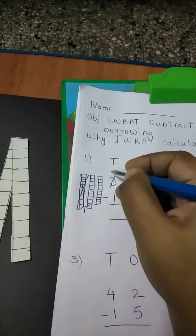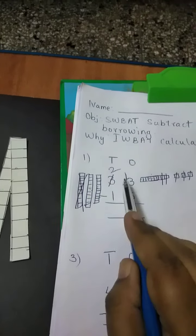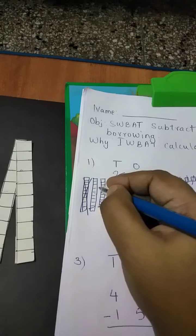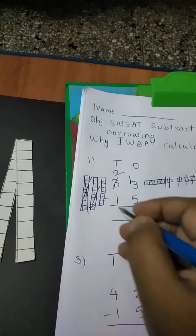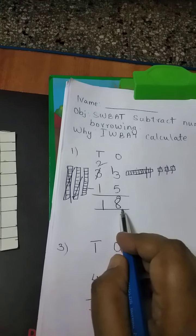That means 2 remain here, and this became 13. So the tens that were here are no longer here, I took them. So 2 minus 1. So from 2 I will subtract 1. How many remain? 1. So the answer is 18.